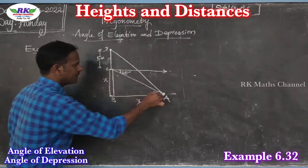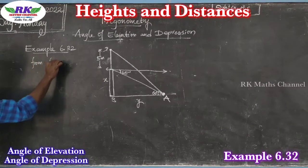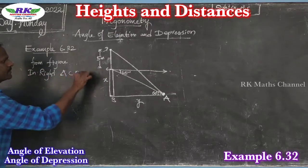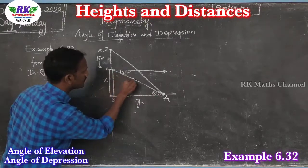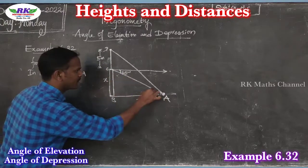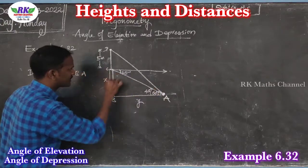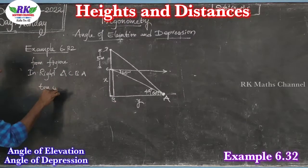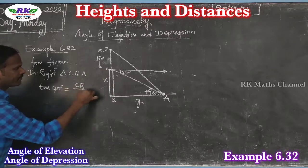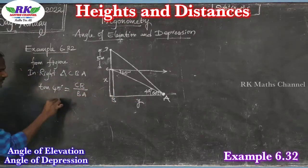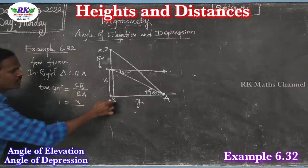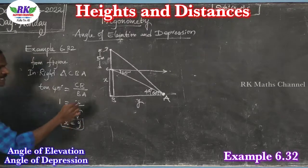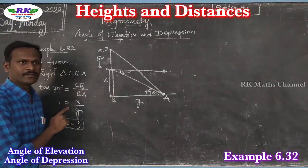In right triangle CBA, using the angle of depression of 45 degrees: tan 45° = CB / BA. Since tan 45° = 1, we get CB = BA, meaning x = y. This is the first condition.